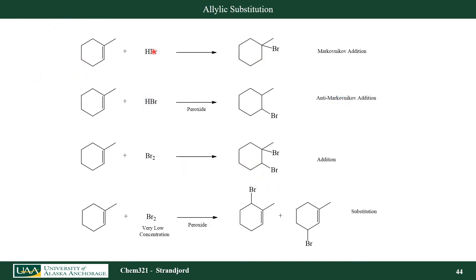In review: if I take an alkene and react it with just HBr, I get Markovnikov addition. If I react an alkene with HBr in the presence of a peroxide, I get anti-Markovnikov addition. If I take an alkene with bromine gas, I get addition of bromine across the double bond with mostly syn addition. If I now take an alkene and bromine gas but reduce the concentration to very low levels and add some peroxide, I actually get allylic substitution reactions — addition of bromine in the allylic position, one carbon away from the double bond.